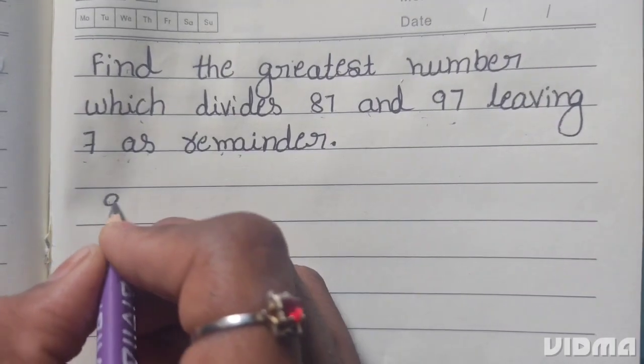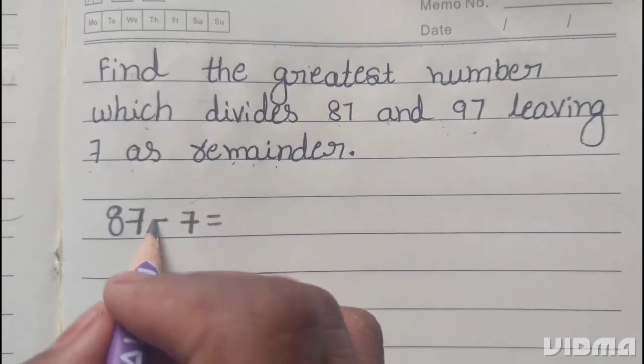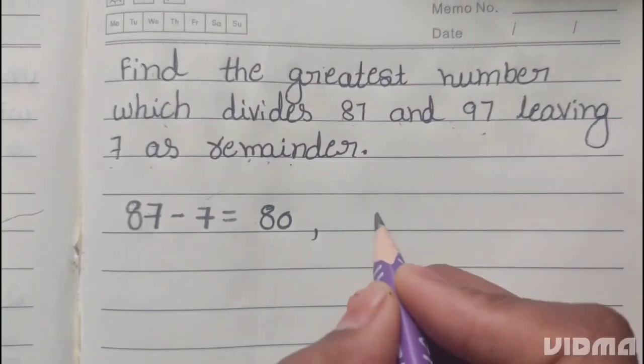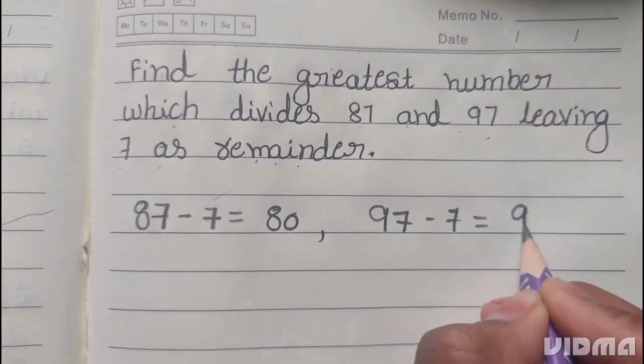Now we have to subtract. 87 subtract 7 equals 80. 97 subtract 7 equals 90.